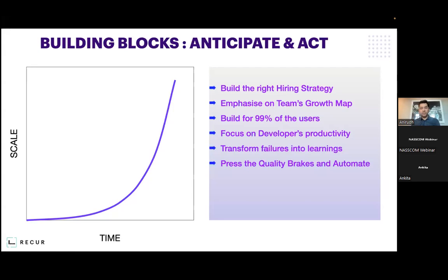Whenever there's a failure, how do we react? I used to be frustrated — I used to talk to that person asking why this happened, what went wrong. Then I realized I was asking those wrong questions every time to that individual. Had that individual known this would be the mistake, they wouldn't have done it. So transform these failures into learning — not just as learning for that one individual who made the mistake or leaked the production bug, but make it a learning for the entire team so the next time the entire team doesn't make the same mistake. Don't make your people go into a defensive mode. Sit with them, empathize on why it broke, and help find a solution.